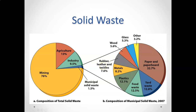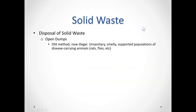Here's what's in the waste that we throw away on a daily basis. Most of what we throw away is paper and paperboard, followed closely by yard waste, food waste, and plastics. Then you have metals, textiles, wood, glass, and an 'other' category.